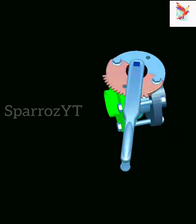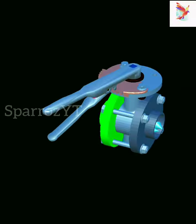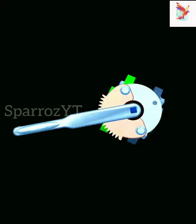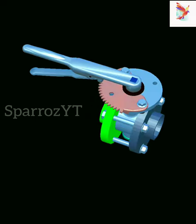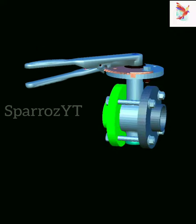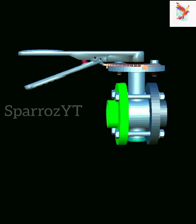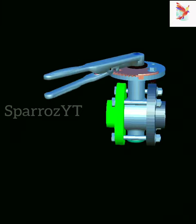A butterfly valve is a valve that isolates or regulates the flow of a fluid. This valve is a type of quarter-turn valve. A quarter-turn valve can open or close whenever the handle is turned 90 degrees. The main function of these valves is to control the flow of liquids through a section of pipe.